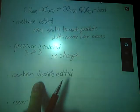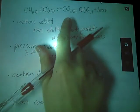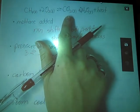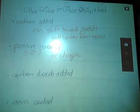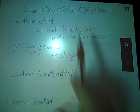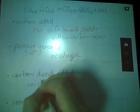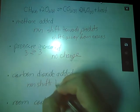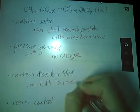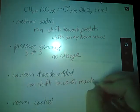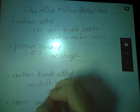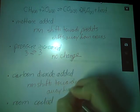Next says carbon dioxide is added. Carbon dioxide is a product here. So again, we're going to shift away from the excess. Excess means we're going to shift to the left towards reactants. Same reason, away from excess.